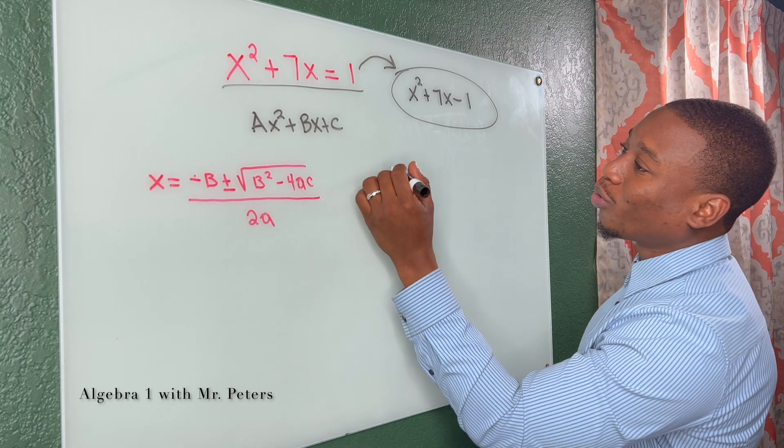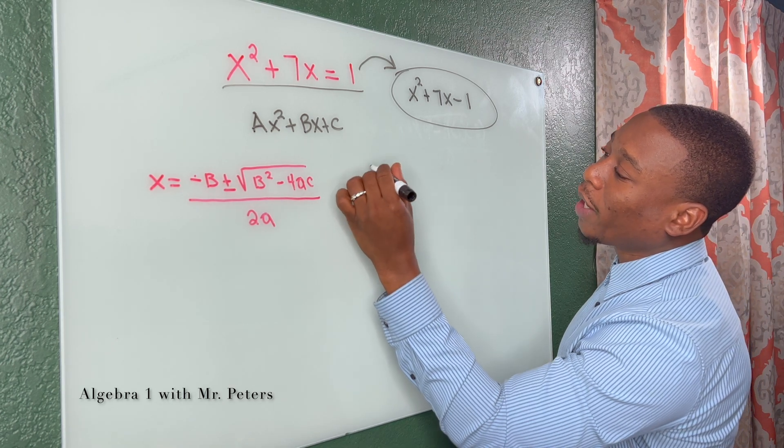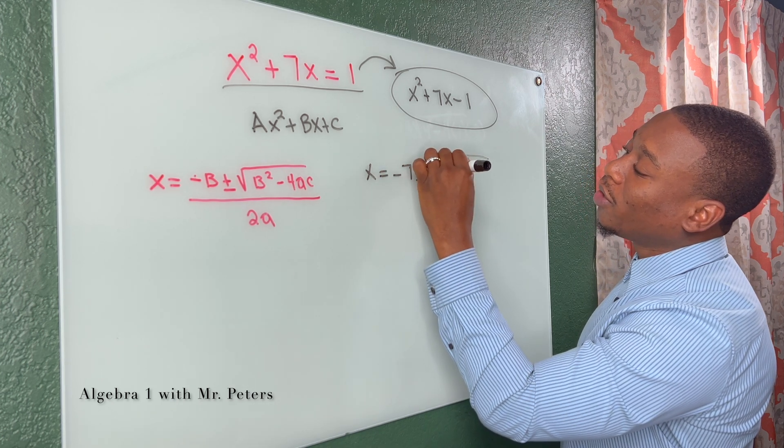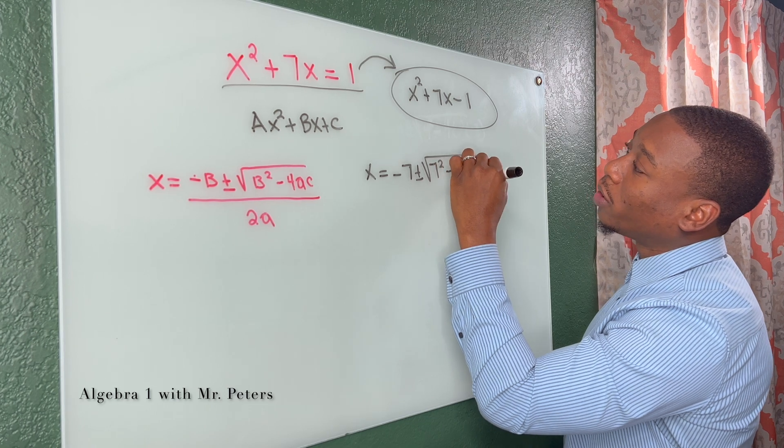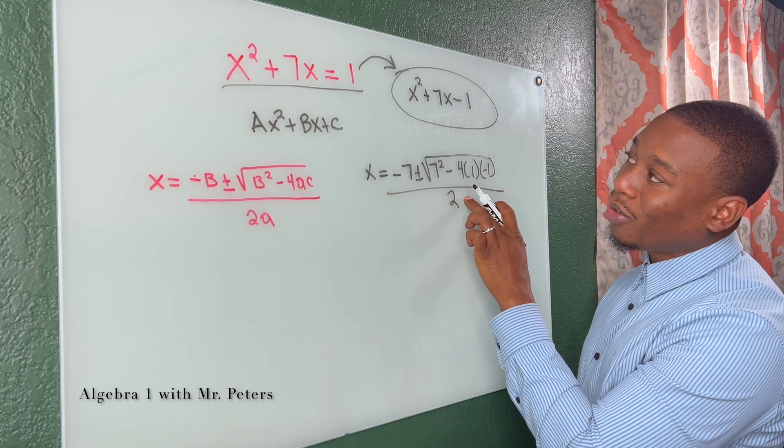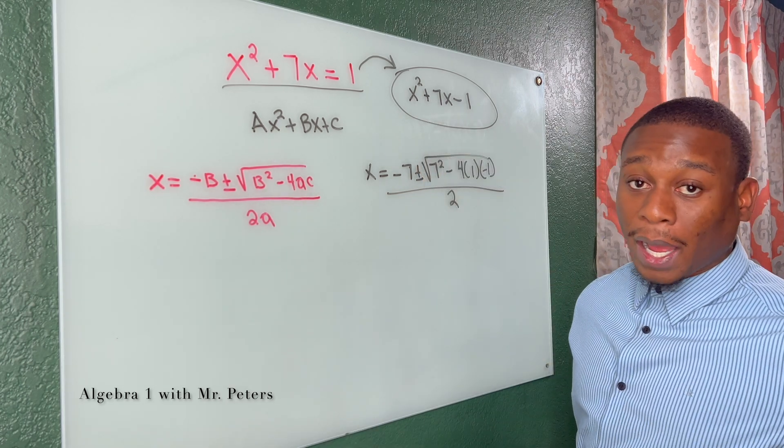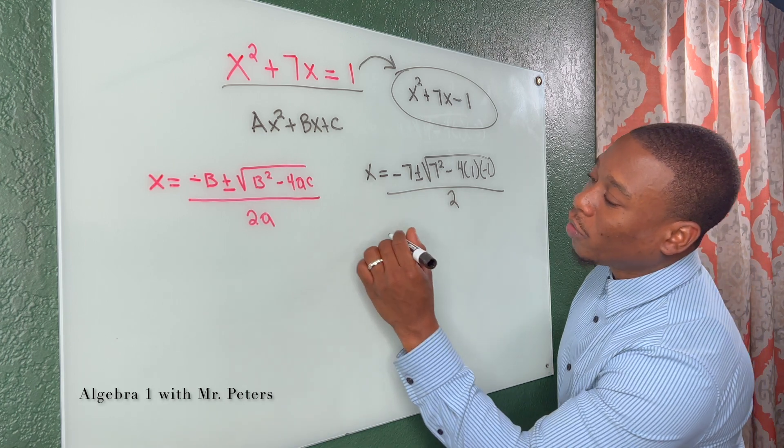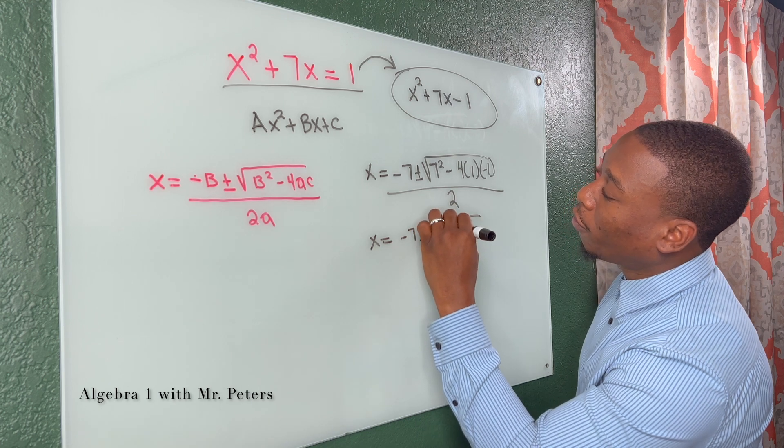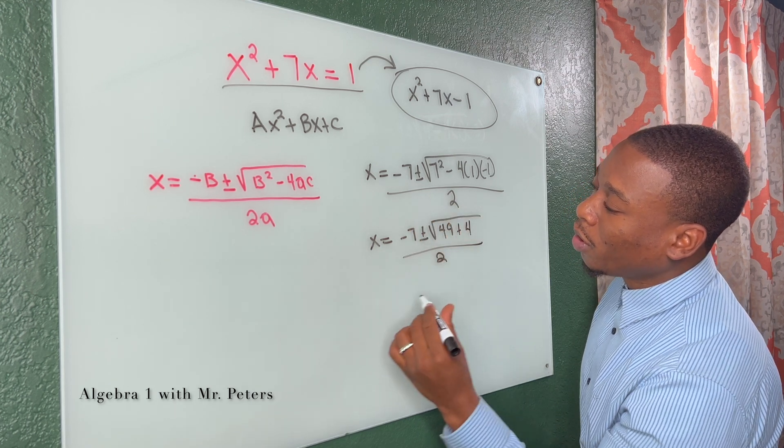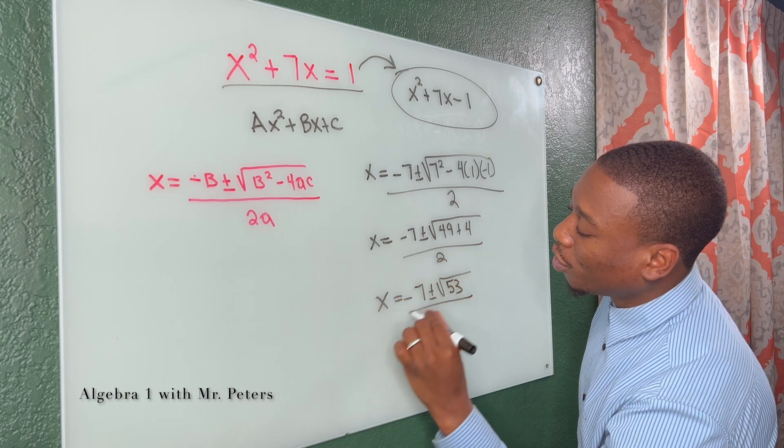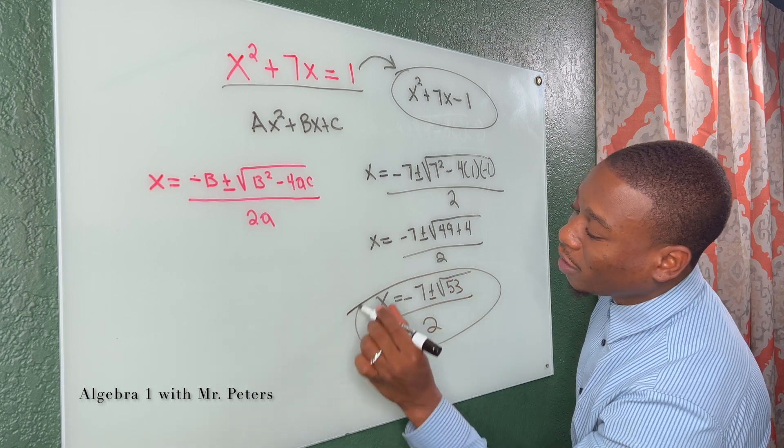So we have to go from this step to this step if we want to get this correct. Now that we have done that, let's go through now. So we have X is equal to negative seven plus or minus seven squared minus four times A, which is one times C, which is negative one all over two. If there's no number in front of that lead coefficient, you don't even have to put times one. So now we go through X is equal to negative seven plus or minus 49 plus four all over two. Now we have X is equal to negative seven plus or minus radical 53 over two.